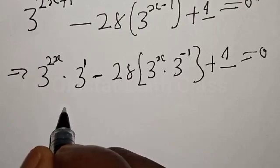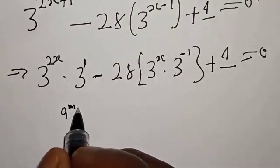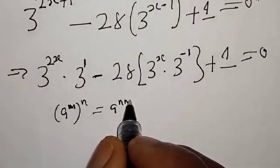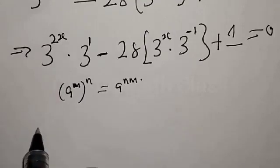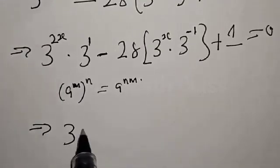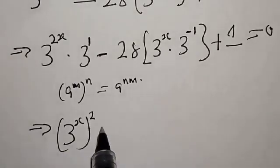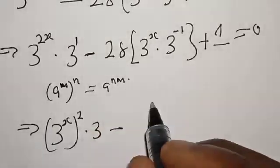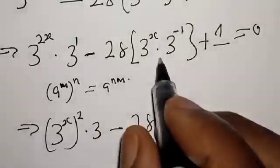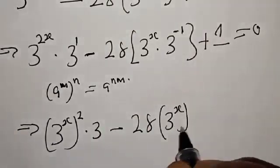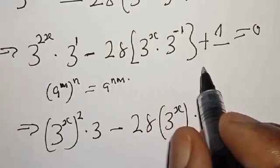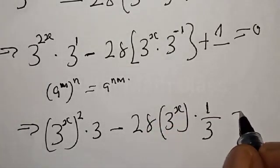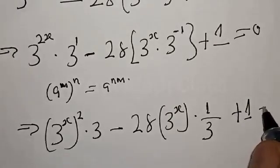Here, remember that A raised to the power m, raised to the power n, is equal to A raised to the power m times n. So 3 raised to the power 2x multiplied by 3 raised to the power 1 is the same as 3 times t squared, minus 28 into t raised to the power x multiplied by 3 raised to the power minus 1, which is the same as 1 over 3, then plus 1.